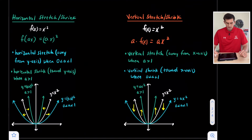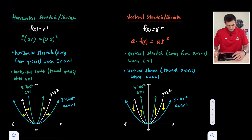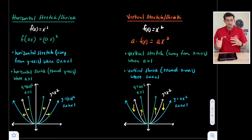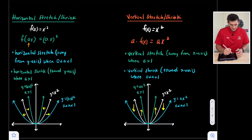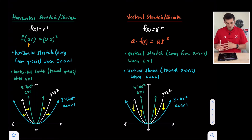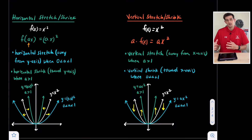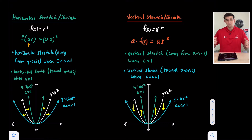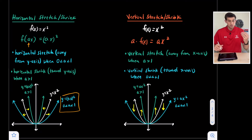Now let's talk about horizontal stretches and shrinks, then vertical stretches and shrinks. On the left side we have horizontal stretch and shrink, starting with our parent function f of x equals x squared in white. For horizontal, since the horizontal axis is the x-axis, we multiply by the x variable: f of a times x, giving us f of x equals ax squared. That a value is written in parentheses to show we're multiplying x first, not the output.